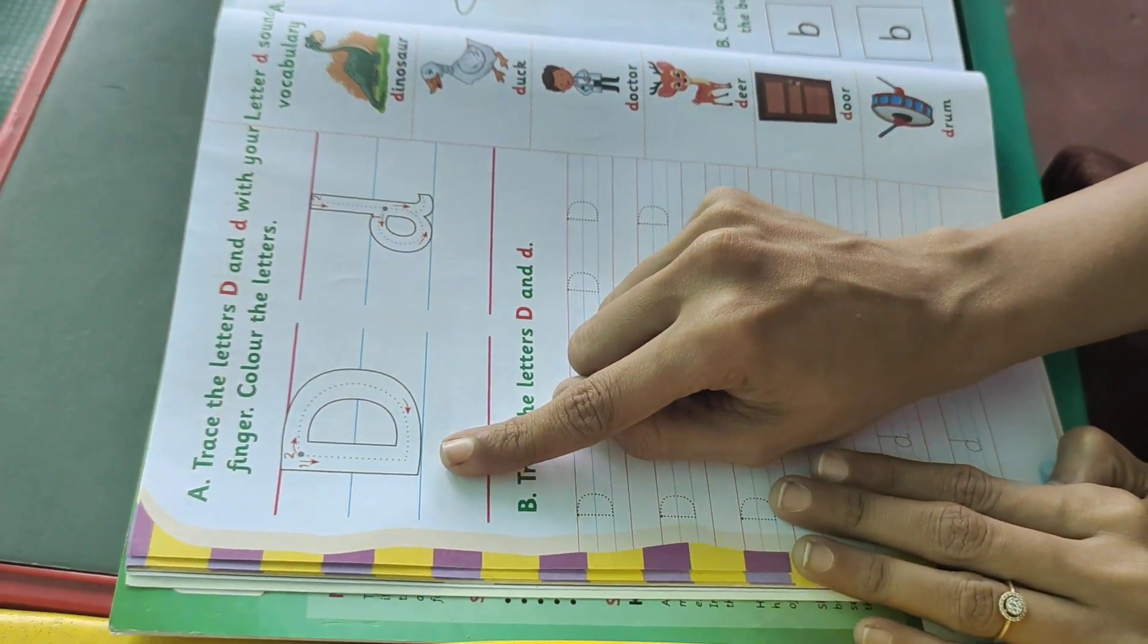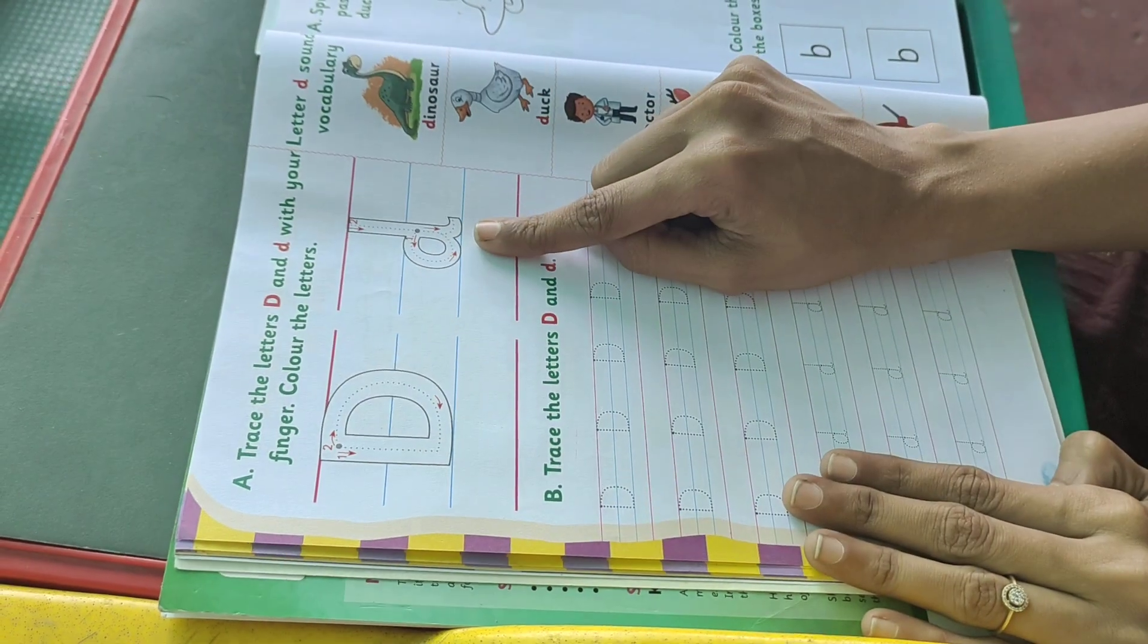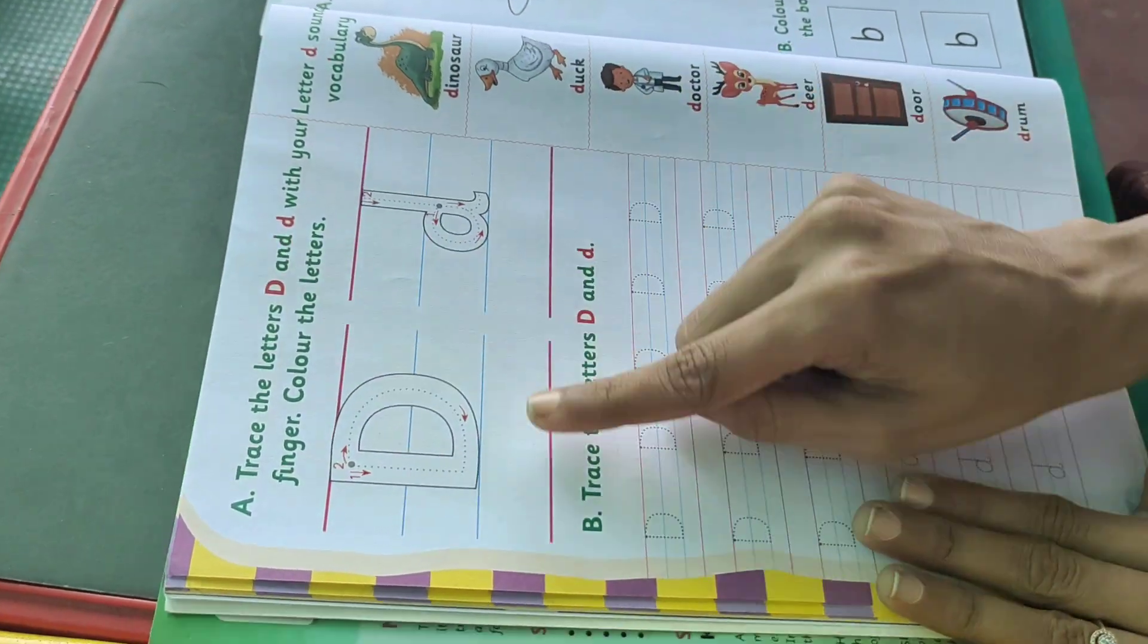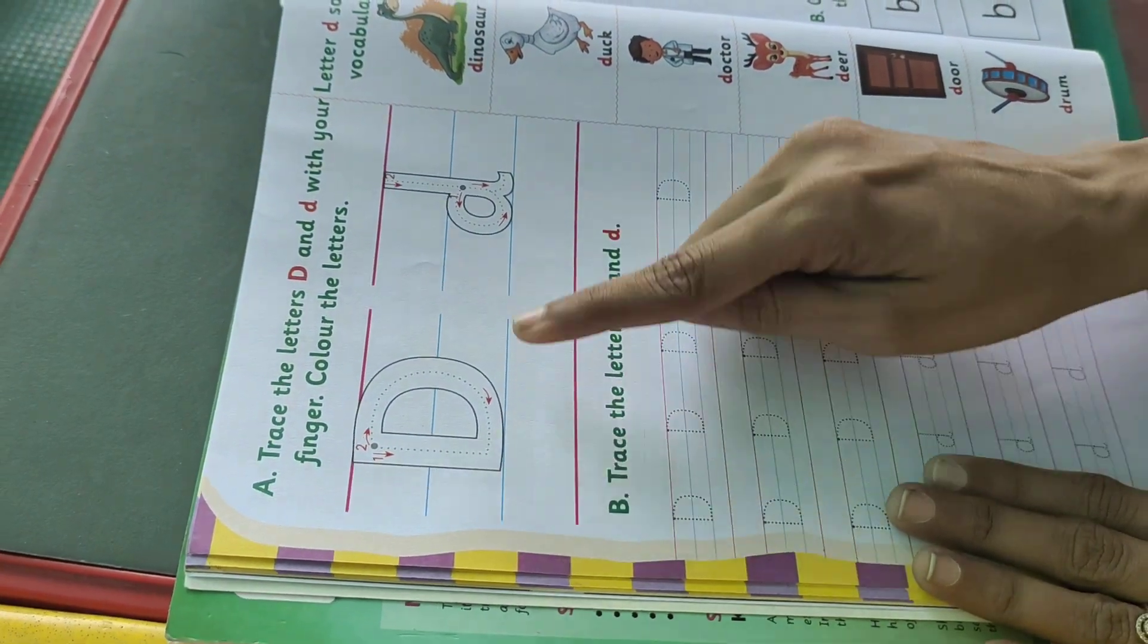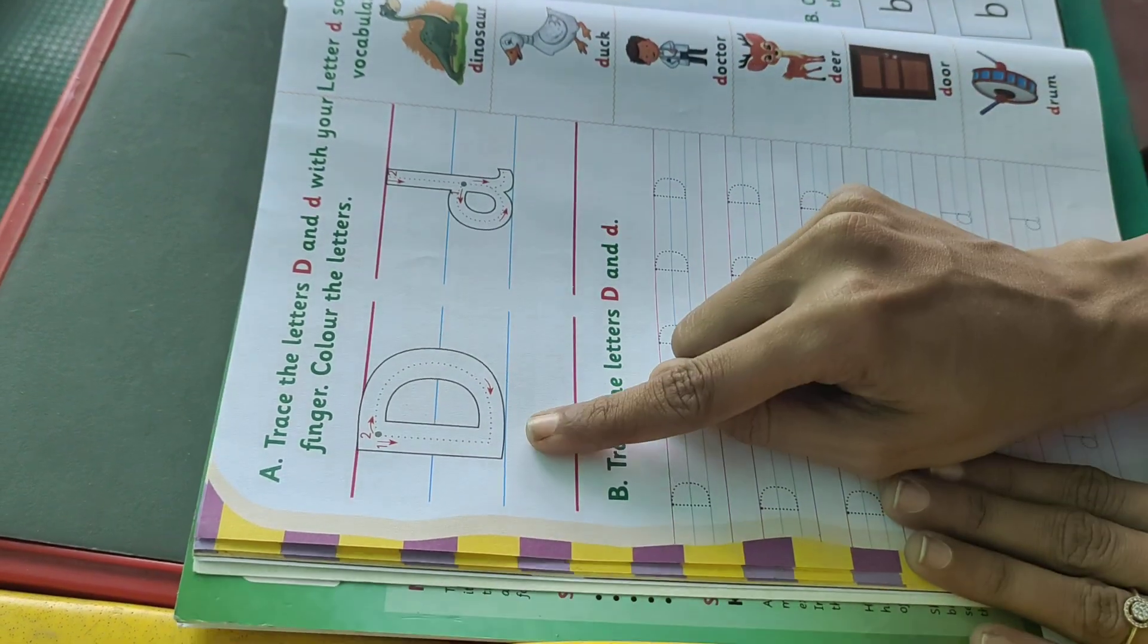Look here, kids. This is capital D. This is small d. Now, we will see how to write capital D and small d. For capital D,